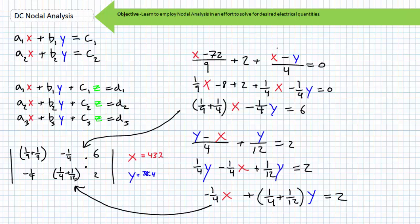If you performed these steps correctly, you arranged the equations as shown and found variable X to be 43.2 and variable Y to be 38.4. Note I included the algebraic steps I used to arrive at these answers — they may differ from yours, but the end results should be the same. If you obtained different results, pause the lecture and check out the steps I used to correct any misconceptions. If you're totally lost, check out the first 10 minutes of the Mesh Analysis lecture where I review these techniques.